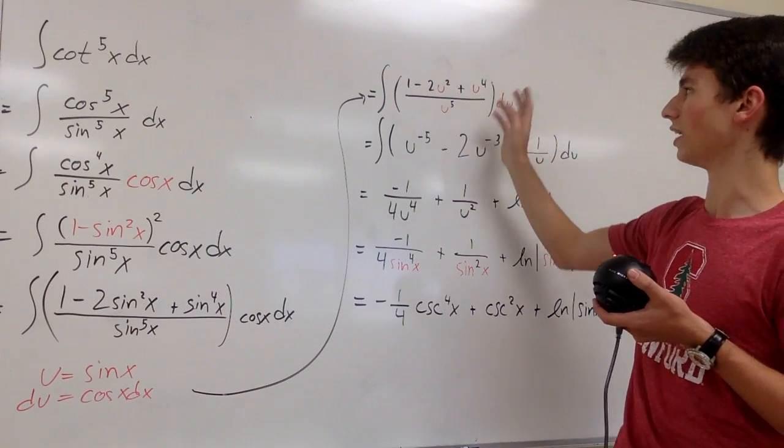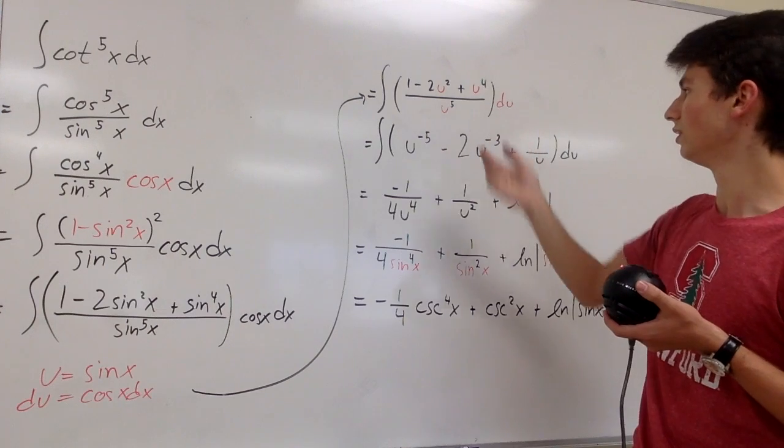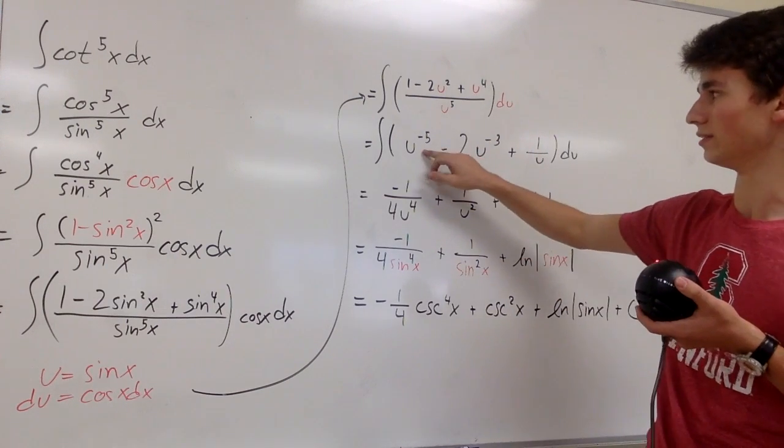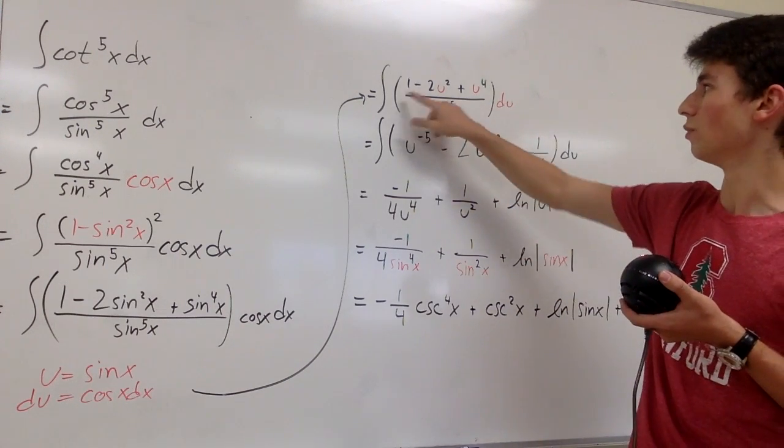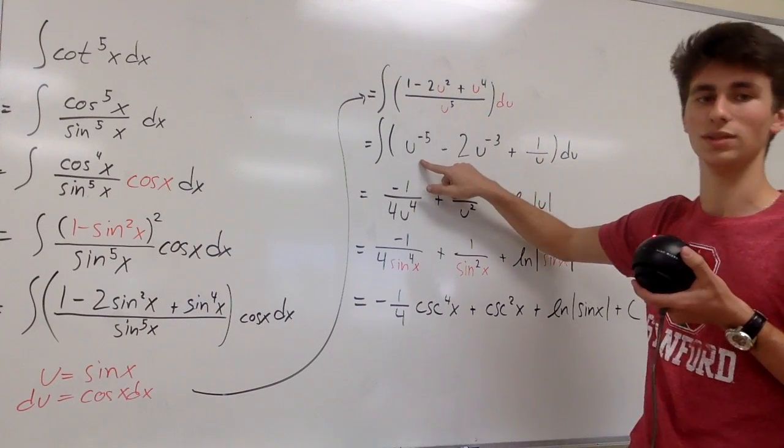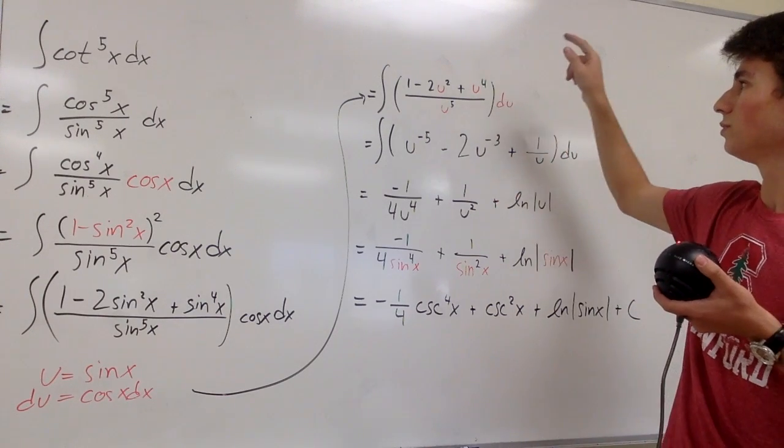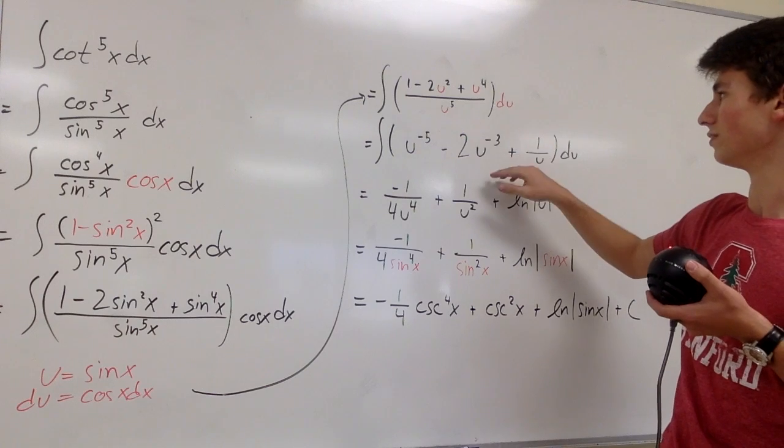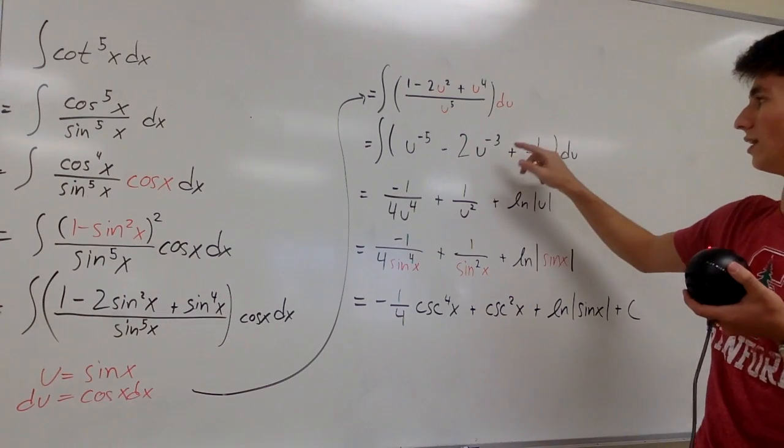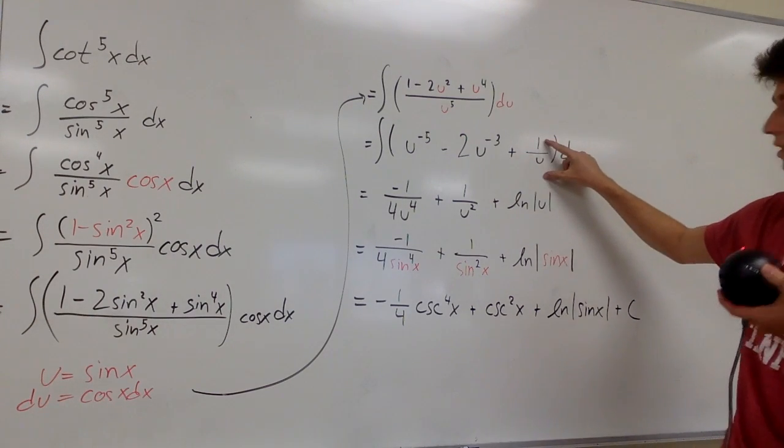And then we can split the fraction and bring all the u's to the top in terms of negative powers. So one over u to the fifth is the same as u to the negative fifth. Two u squared over u to the fifth is the same as two u to the negative third. And we're going to leave this as one over u.